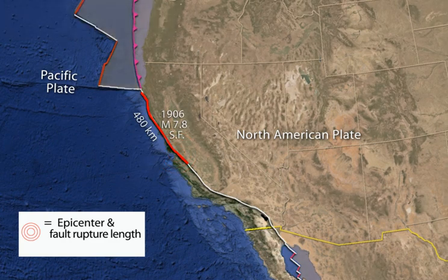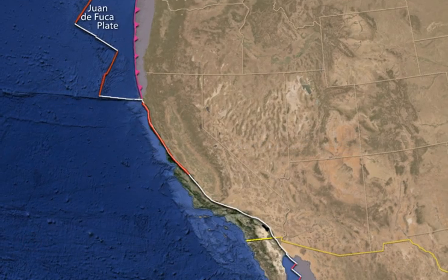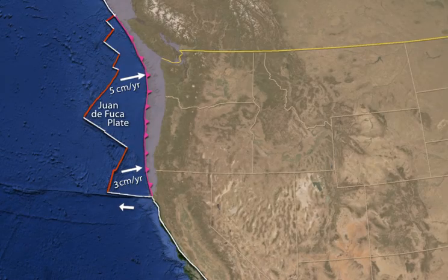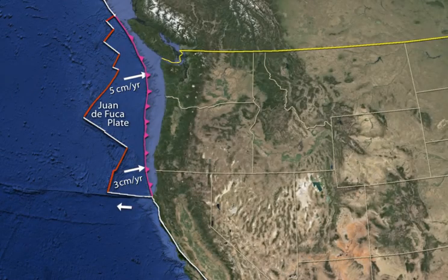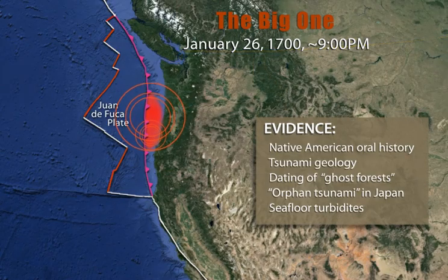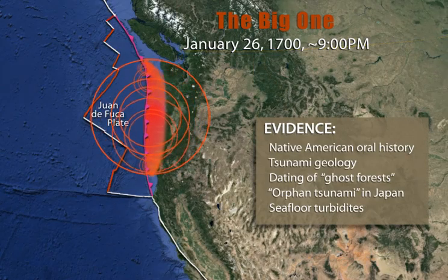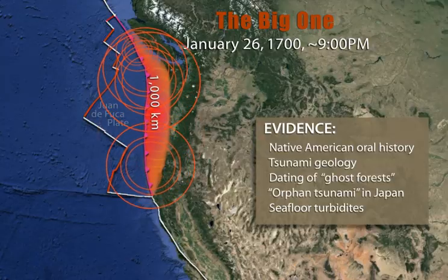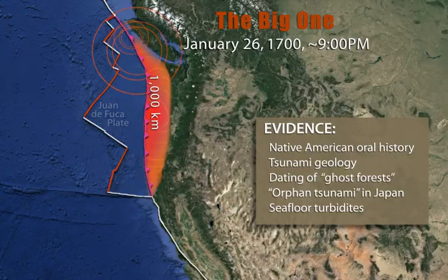North of the San Andreas Fault, the Juan de Fuca plate dives beneath and pushes on the margin of the North American plate. Rates of convergence range from 3 to 5 centimeters per year. On January 26, 1700, a magnitude 9 Great Earthquake ruptured the full 1,000 kilometer length of that plate boundary. Magnitude 8 to 9 Great Earthquakes rupture the subduction zone on average every 300 to 500 years.